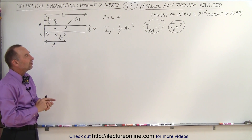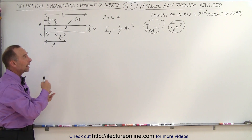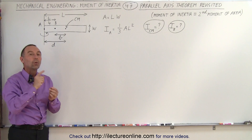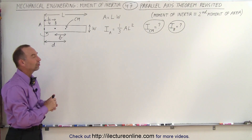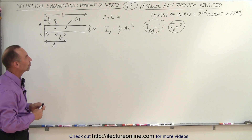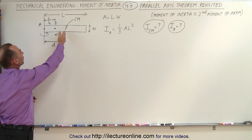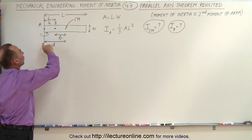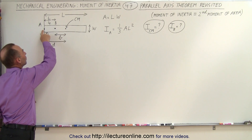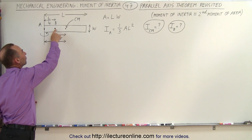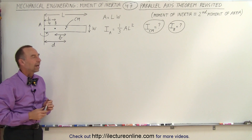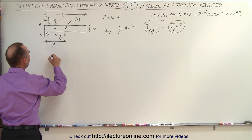Typically we use the parallel axis theorem to find the moment of inertia at any other point once the moment of inertia at the center of mass is known. But in this case, we don't know the moment of inertia at the center of mass — we know it at some other point. So we're going to relate the moment of inertia at the center of mass to the one at A, and find the moment of inertia at B relative to A.